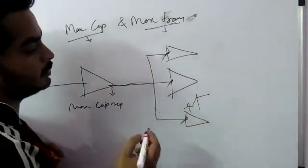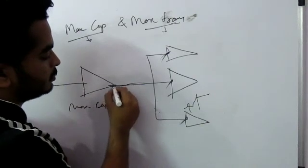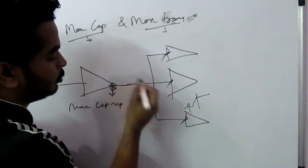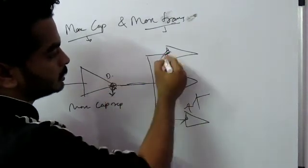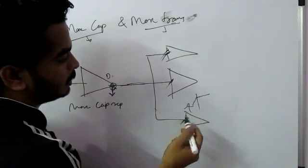So if you see, cap has always been defined at this point - the output of the driver. Transition has always been defined as the input of the fan-in.